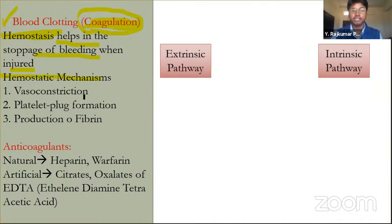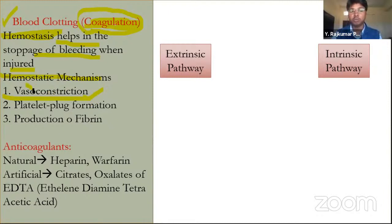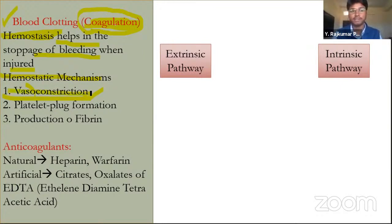There are three mechanisms in blood clotting. First is vasoconstriction — when injured, blood vessels contract, narrowing the lumen and reducing bleeding. Second is platelet plug formation — platelets, also called thrombocytes, help form a platelet plug to initially stop the bleeding.